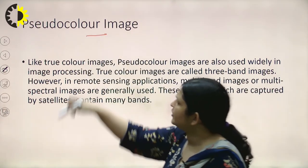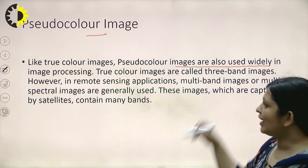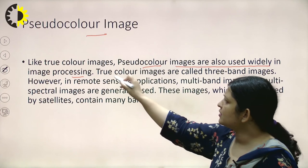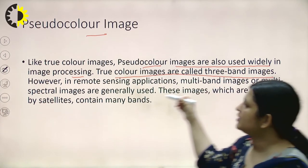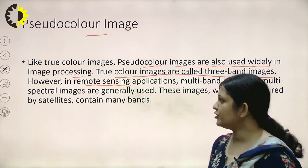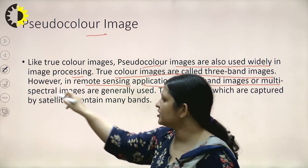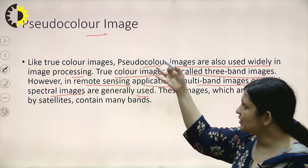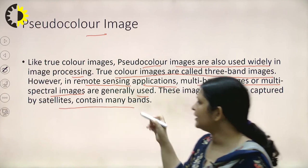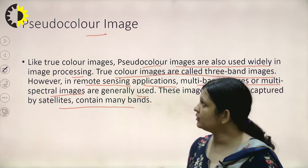Pseudo color images are widely used in image processing. True color images are called three-band images; however, in remote sensing applications such as satellite imagery, multi-band or multi-spectral images are generally used. When we have multiple bands, pseudo color images are used — these are called pseudo images.